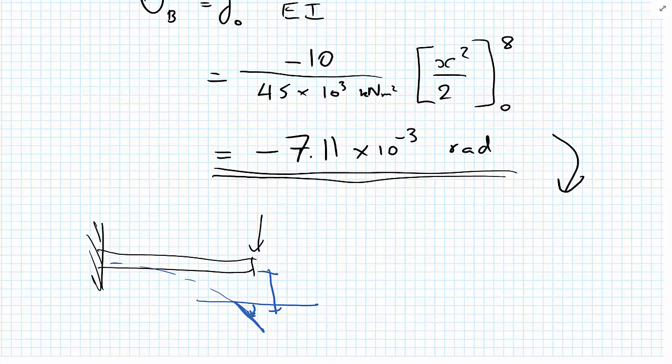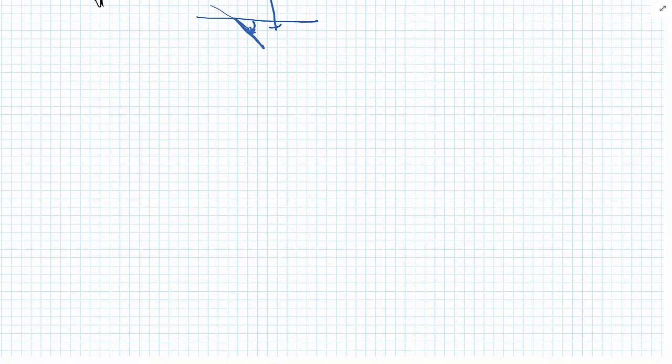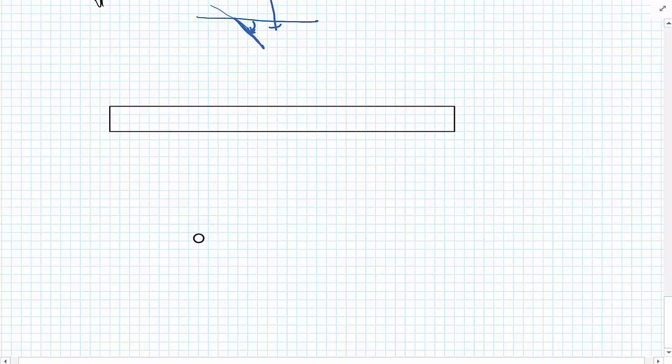For this relatively simple example of a point load on a cantilever, there are standard results which you can find via a quick internet search to verify both the deflection and the rotation. You can also use the double integration method as a second verification. One remark: the moment function for the real case and the unit load case were just multiples of each other — this isn't always the case, and there's a tutorial problem in the notes to test that understanding.